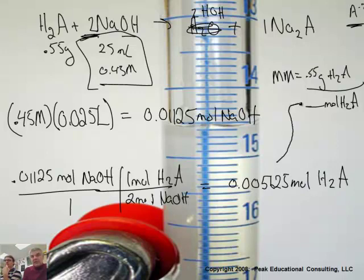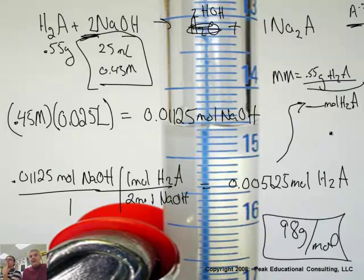Of course, that number then gets plugged in here and we get a grand number of 98. 98 grams per mole. So I got that by taking 0.55 divided by 0.005625 and I got 98 grams in a mole. And that would be the molar mass of the diprotic acid.